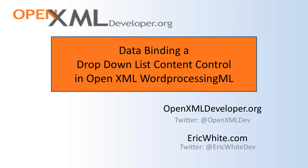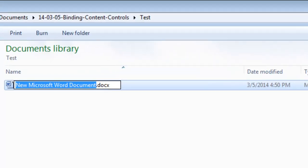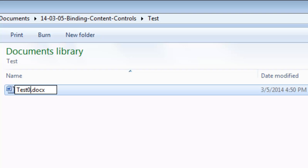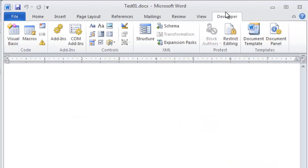We're going to take as a primary example data binding a drop-down list content control in OpenXML WordprocessingML. First of all, let's go look at the varieties of content controls and what the markup looks like for those, and then we'll discuss how to data bind them. I'm going to create a Word document called Test01, and I'm going to insert some content controls.